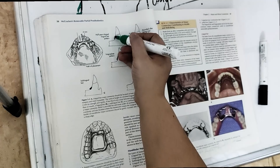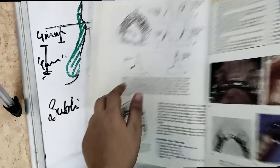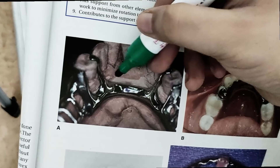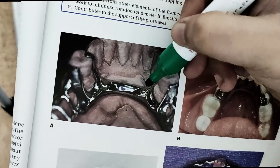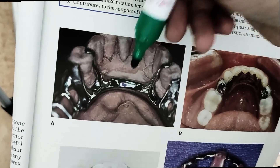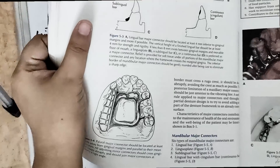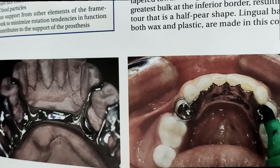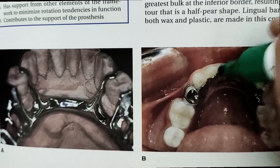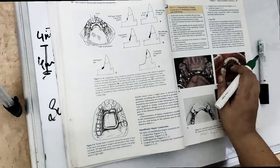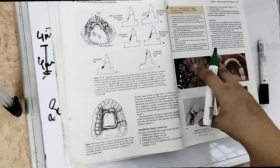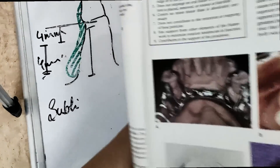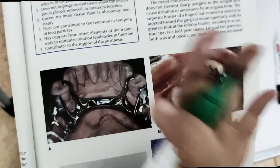The advantage of lingual plate over lingual bar is that because it follows the contour of the tooth with tight contact, there is no food entrapment between the bar and the tissue — unlike the lingual bar, where food can accumulate beneath it and cause patient discomfort.